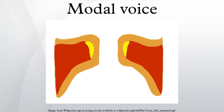In the modal register, the length, tension, and mass of the vocal folds are in a state of flux, which causes the frequency of vibration of the vocal folds to vary. As pitch rises, the vocal folds increase in length and in tension and their edges become thinner. If a speaker or singer holds any of these three factors constant, the laryngeal function becomes static and eventually breaks occur, resulting in obvious changes in vocal quality.